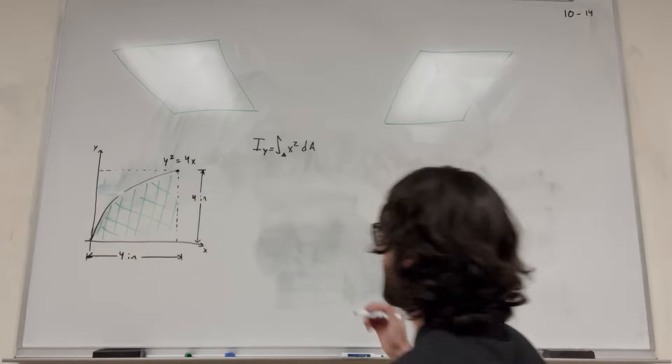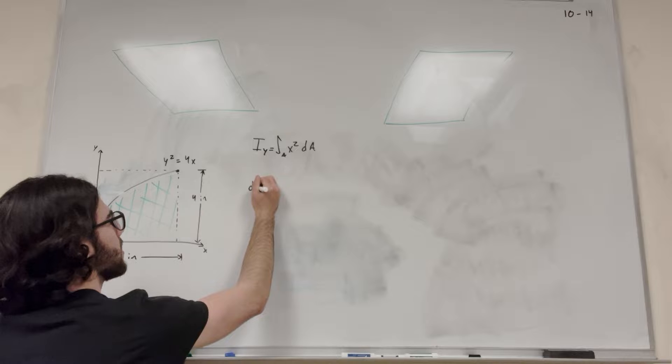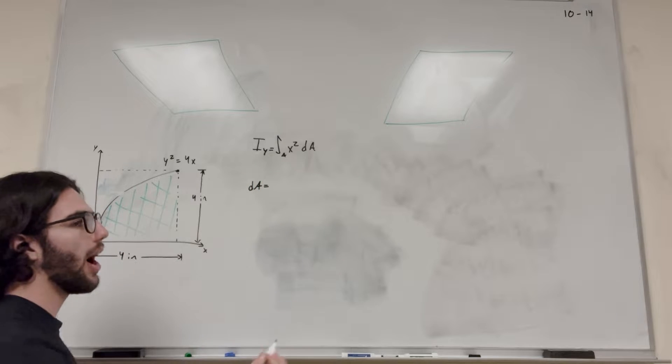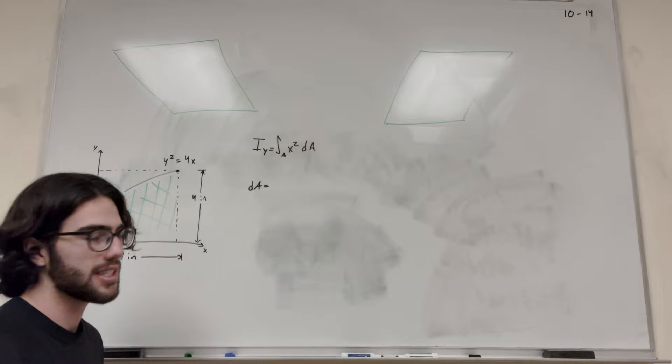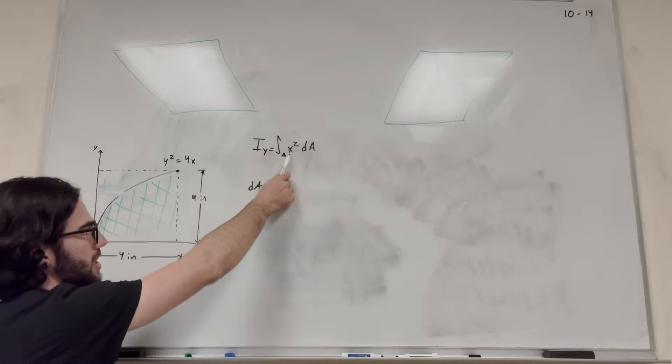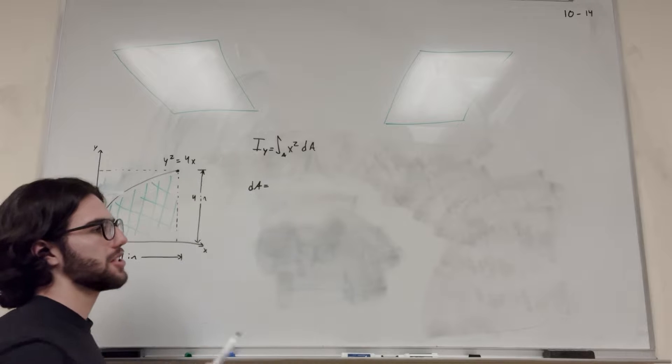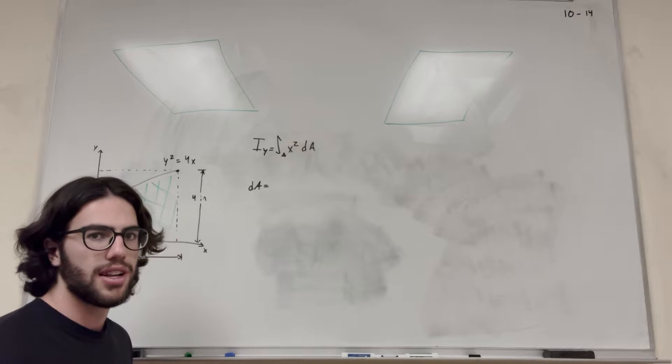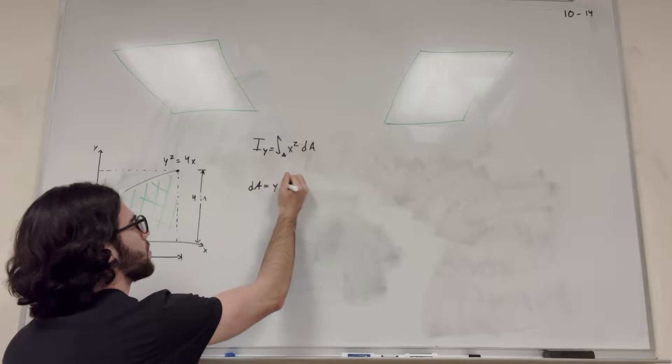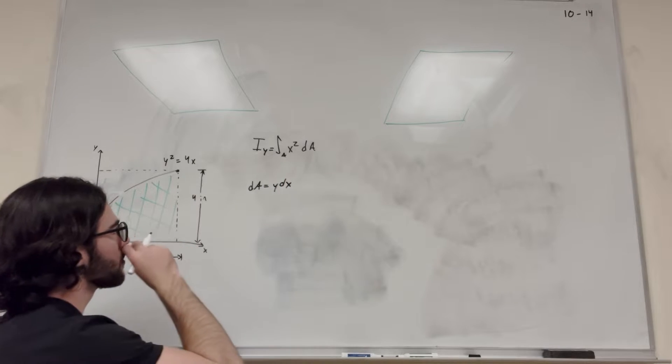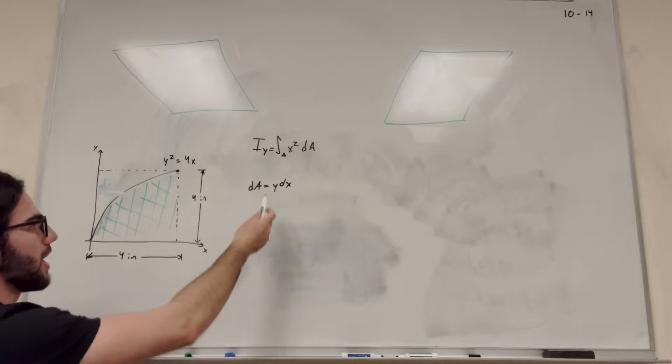So dA, we know that dA is equal to x dy or y dx, because area is x times y. In this case, we want to use dx because we have an x here. You can make things simpler. You can do it the other way if you want, that works too, but I find it's always simpler just to do this. So dA is equal to y dx. Now we need to figure out what y is.